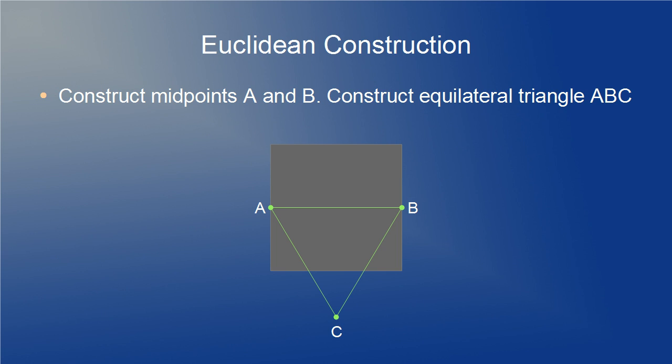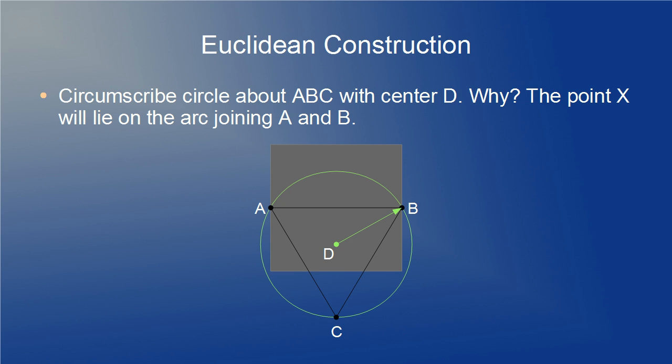Construct the midpoints A and B for the left and right sides respectively. Next, construct an equilateral triangle with AB as a base and pointing downwards. That's an easy construction as well. Just set the compass on AB and make little arcs with centers A and then B that intersect at the vertex C. Next, circumscribe a circle around this equilateral triangle. We've done this because the point X will lie on the arc AB in the upper rectangle. You can take any point on that arc as long as it's strictly between A and B. The angle will be 120 degrees no matter where on that arc you choose.